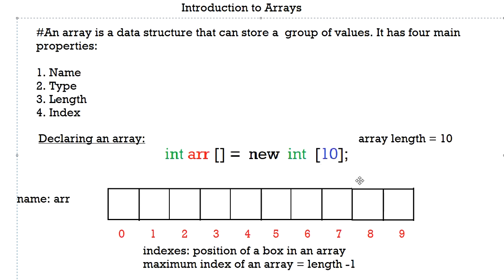Whenever we declare an array, we basically create a series of boxes. Here we have an array called R, as written. This array can store all integers, and there are a total of 10 boxes because our array length is 10.